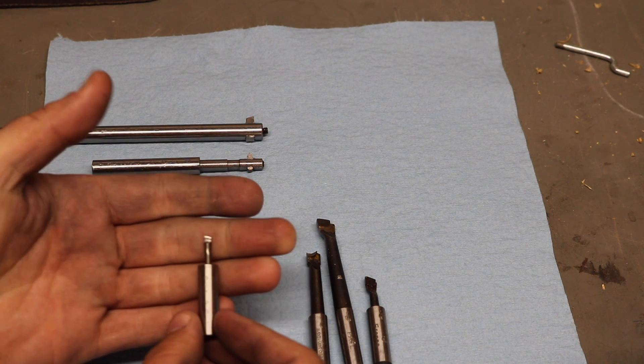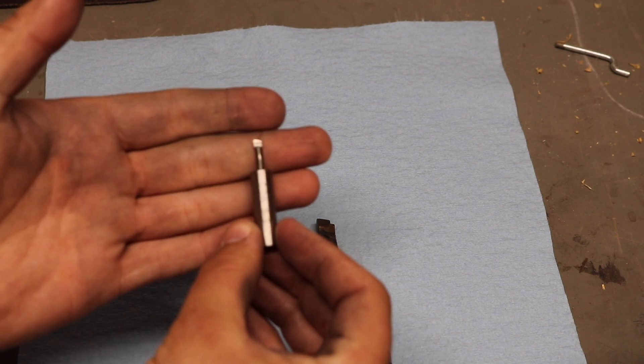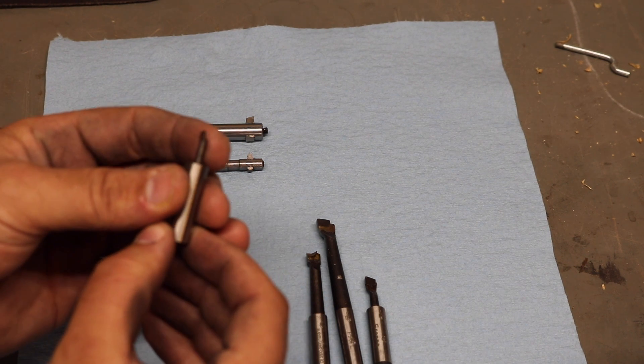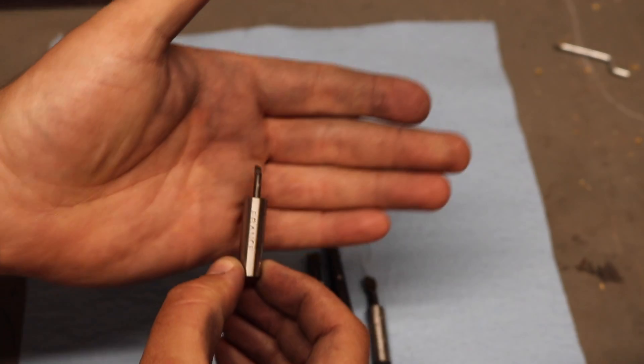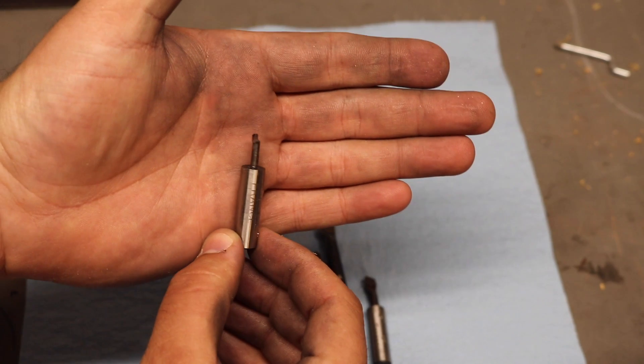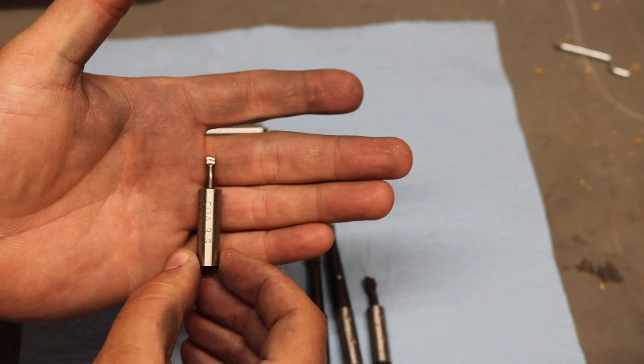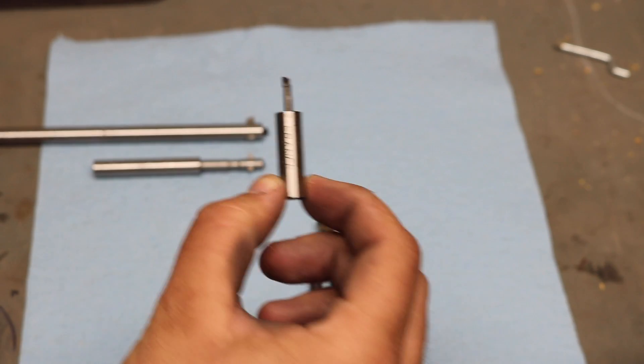Now as an aside, I also have this I've used in a number of my videos. I call it the world's cutest boring bar. It's actually cobalt and it's pre-ground. I've sharpened it a few times, but this thing, for as hilariously small as it is, works amazingly. I love it. It's brilliant.